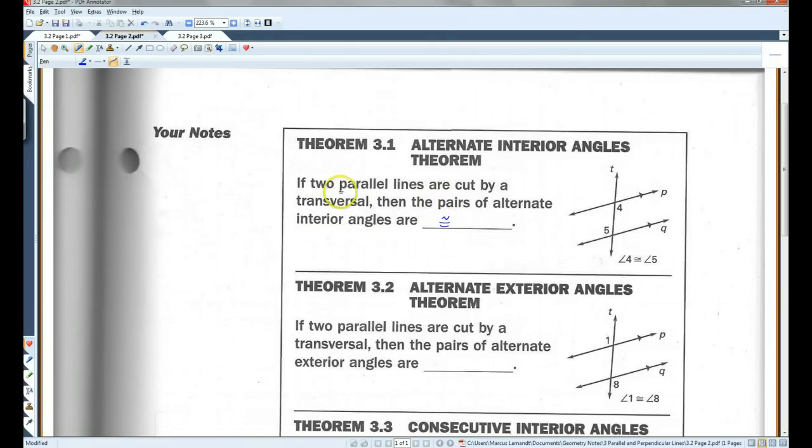Now, keep in mind, this is only if the lines are parallel. If these lines are not parallel, this is not true. Okay? So, angles 4 and 5, also this angle and this angle, would be congruent.